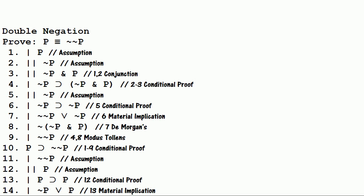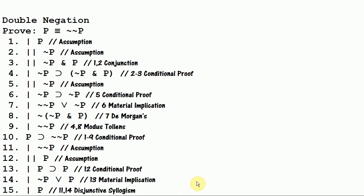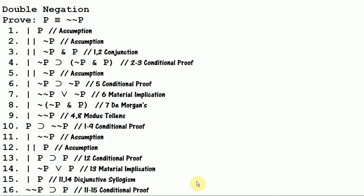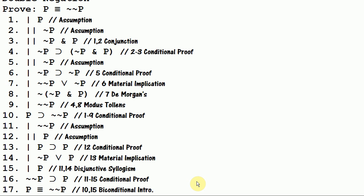And what can I do with this? I transform it through material implication into not P or P. And now that I have this and I have not not P, I can use a disjunctive syllogism — which would deny this disjunct — and then I'll get P. So I do that. Now I have P and I can close off this conditional proof and I get if not not P then P. And then I use biconditional introduction to get P is equivalent to not not P. So there's how you can prove double negation using just the rules that we've already learned.